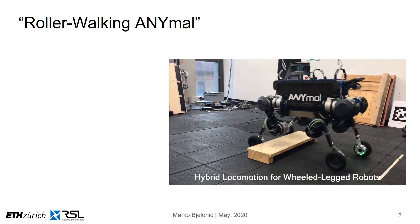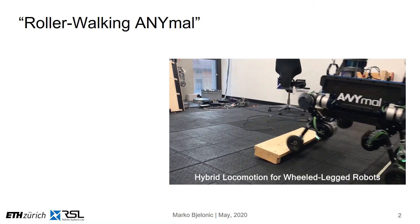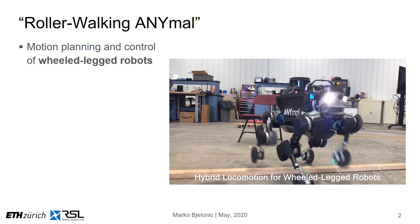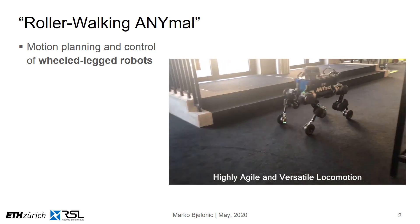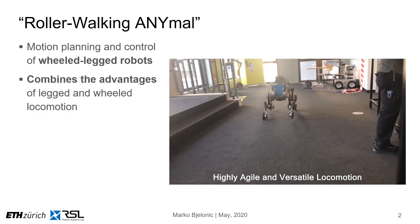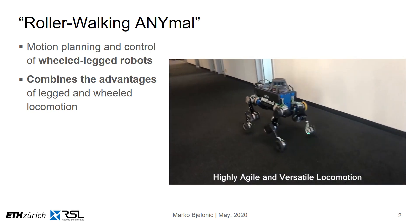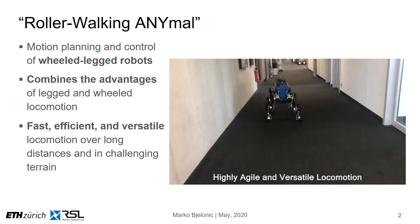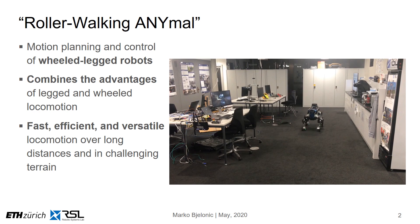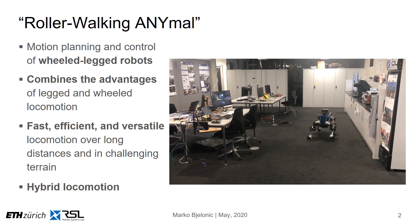We are presenting an optimization-based approach for motion planning and control of wheeled-legged robots, which combine the advantages of legged and wheeled locomotion. In this work, we show fast, efficient, and versatile locomotion over long distances and in challenging terrain by applying hybrid locomotion to our roller walking robot ANYmal, which is now able to walk and drive at the same time.